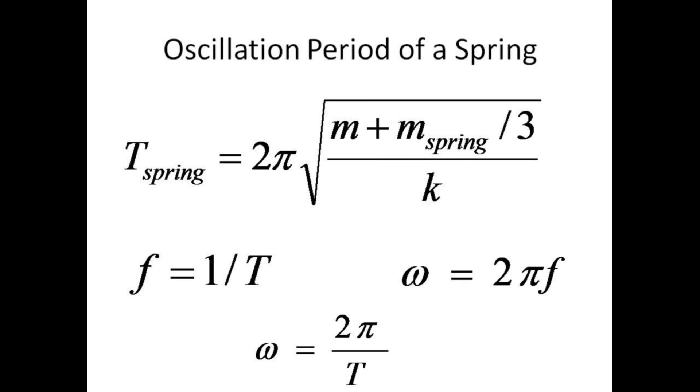The period of the spring depends on how much mass is attached to the spring, m, one third of the mass of the spring itself, and the spring constant. The oscillation frequency in hertz is the inverse of the period, and the angular frequency in radians per second is two times pi radians per cycle times the frequency.